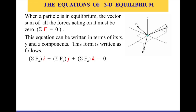So if you have a particle and it is at equilibrium, it means that the vector sum of all forces acting on it must equal to zero. So if we have this particle here in this figure, and I have three forces F1, F2, F3, if this particle is at equilibrium, the summation of all forces should equal to zero. To analyze this, we need to construct the equations of equilibrium.